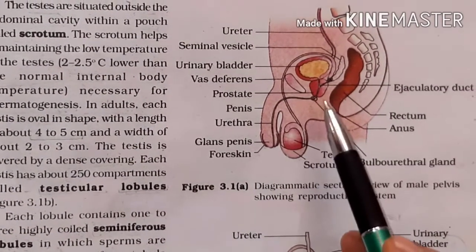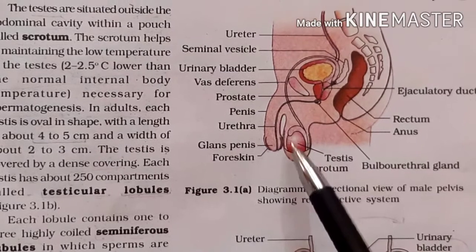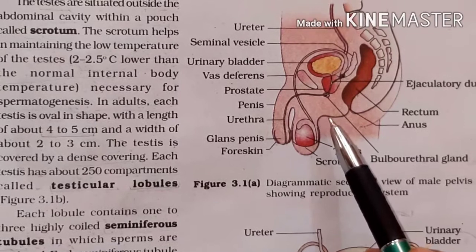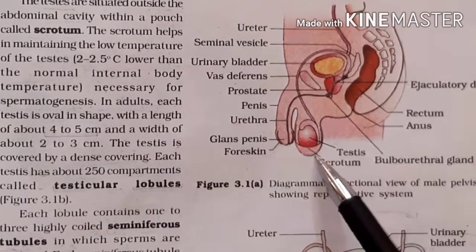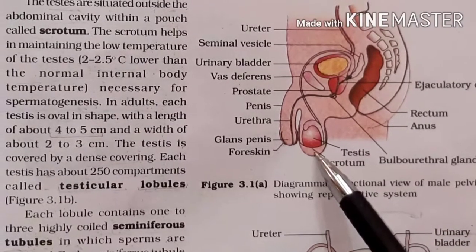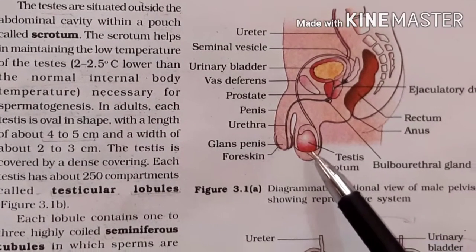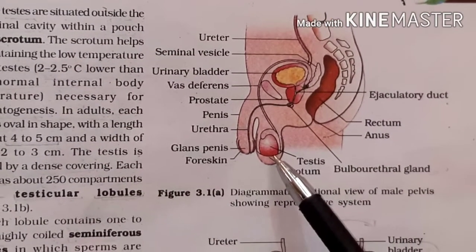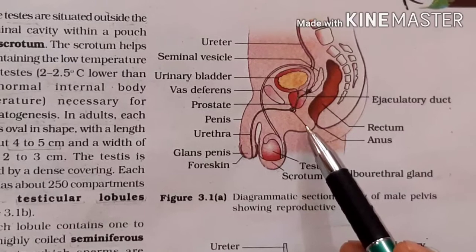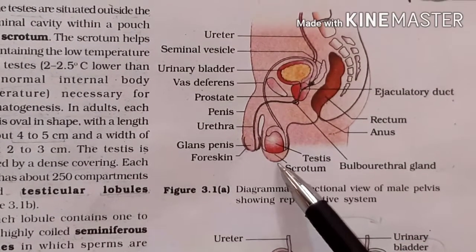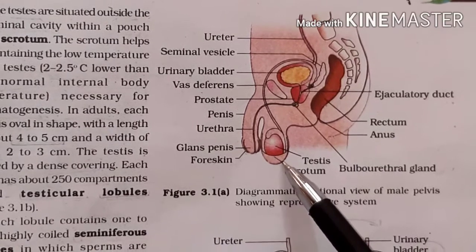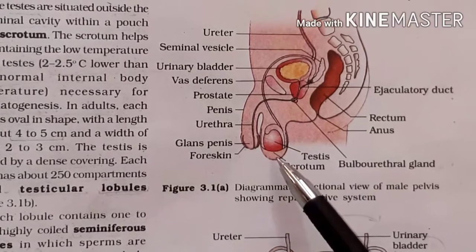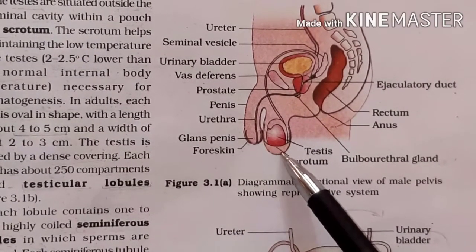The scrotum is a hanging structure that is extra-abdominal — outside the body cavity. This is because sperm require a lower temperature than the body's normal temperature, which is about 2 to 2.5 degrees lower.